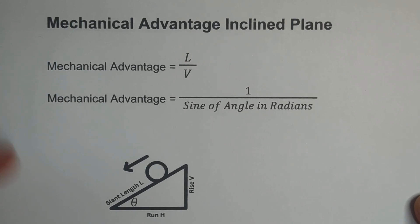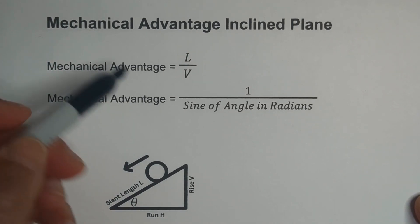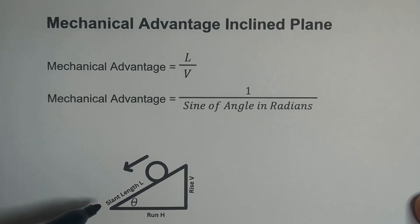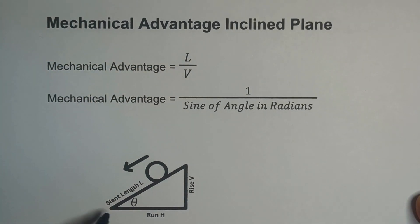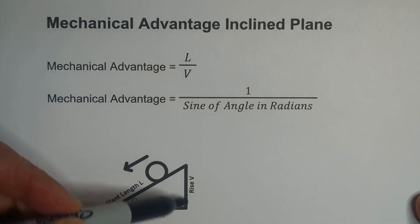You can use one of two formulas. One, you can use mechanical advantage is the slant length, which is L over the rise. The slant length is this length right here, and the rise is there.